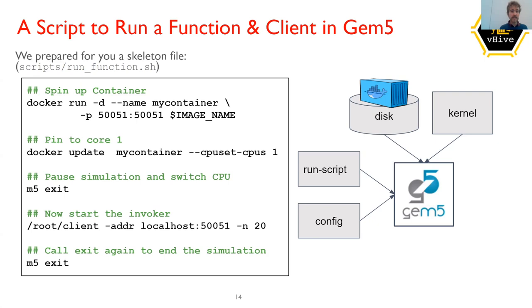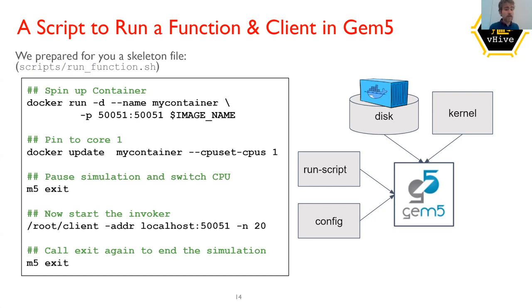After the m5exit, we change the CPU model in the configuration file, then re-enter the simulation and start our client — the same command as before, but this time only issuing 20 requests to make the simulation a bit faster. Finally, we call m5exit again to exit the simulation. That's what this script does — now everything is in place and we could start the simulation.